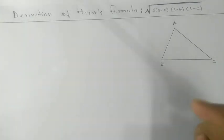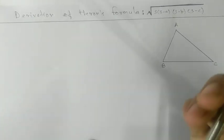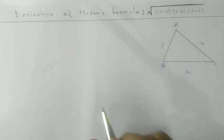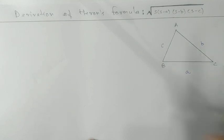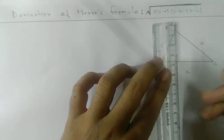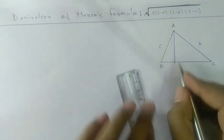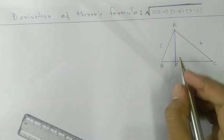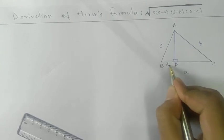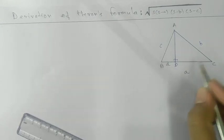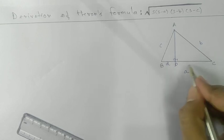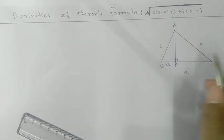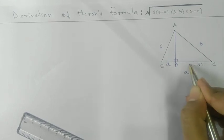Our first step: assume the triangle has sides A, B, and C. Take a perpendicular AD on BC. Let BD equal D, and DC will then be A minus D, since the total base is A.